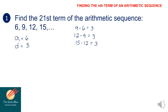Next, we want to find the number of terms. Since we are looking for a sub 21, our n is equal to 21. So we know a sub 1 is equal to 6, the common difference is 3, the number of terms is 21, and a sub 21 is unknown. Let's apply the formula.